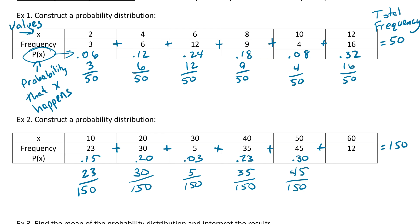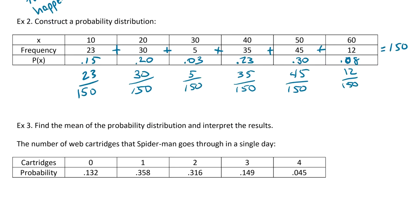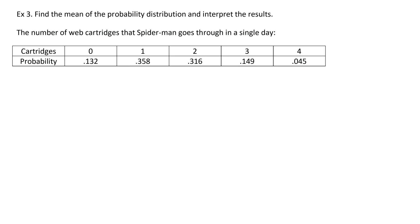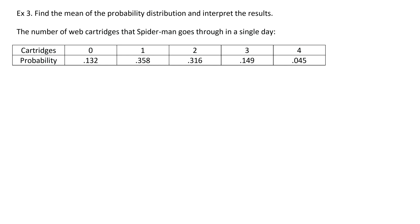Example 3. Now we're going to be finding the mean of a probability distribution. In order to find the mean of a probability distribution, we take the value and we multiply it by its probability, and then we just add all of those numbers up. For example three, the number of web cartridges that Spider-Man goes through in a single day, we have zero through four cartridges, and then the probability that he's going to go through that many cartridges in a single day. Here's what we do.